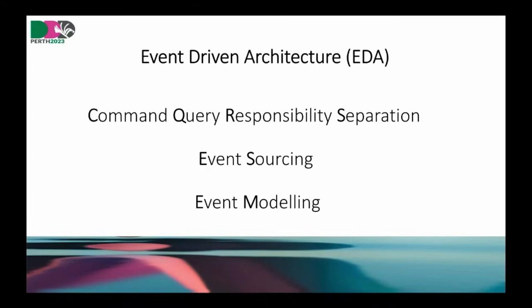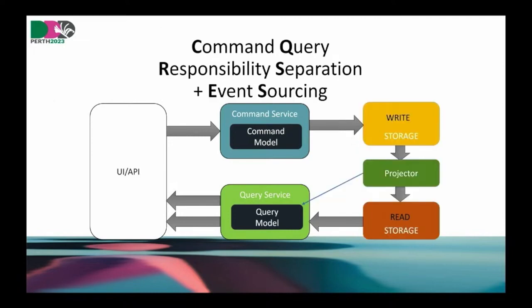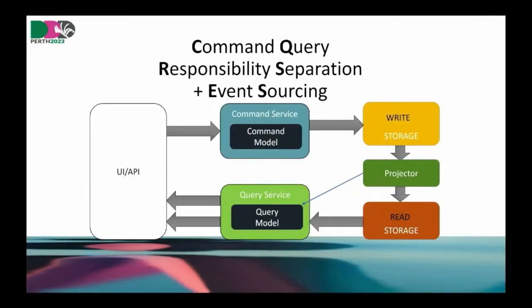Command-Query Responsibility Separation: it's a separation between how the command is structured — the API of the command — how it's stored, and then when we do a view and want the information out, we use a different model. It breaks the database dependency where this model needs to be the same as that one. They constantly change: if I change the command, my query will break. If I go a step further and use event sourcing, I get even better separation — because I write to a separate store, and only write to it. This gives an immediate audit log of everything that has happened, and we don't have an update command.